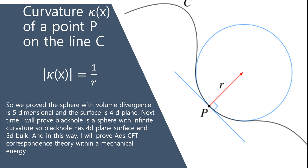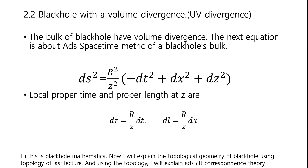Next time, I will prove black hole is a sphere with infinite curvature, so black hole has a 4D plane surface and 5D bulk, and in this way, I will prove ADS-CFT correspondence theory within mechanical energy. Now I will explain the topological geometry of black hole using the topology of the last lecture, and using this topology, I will explain ADS-CFT correspondence theory.